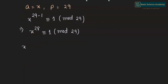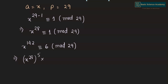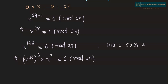We are given x to the power of 142 is congruent to 6 mod 29. We can write x to the power of 142 as x to the power of 28, raised to the power of 5, multiplied by x squared, congruent to 6 mod 29. Because 142 equals 5 multiplied by 28 plus 2.